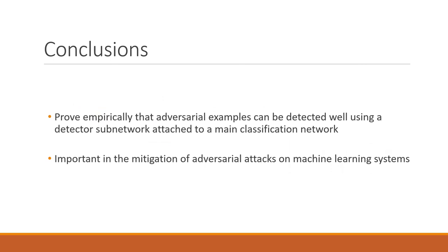The authors concluded by proving empirically that adversarial examples can be detected well using a detector subnetwork attached to a main classification network. They hypothesize this may be because there are regions adversarial to both the classifier and the detector. While the classification network does not directly classify adversarial examples correctly all the time, it allows mitigation of adversarial attacks by resorting to fallback solutions, which is ultimately important in mitigating adversarial attacks on machine learning systems.